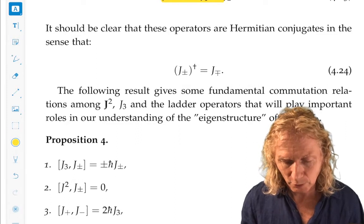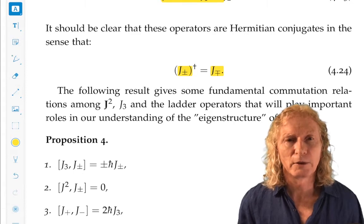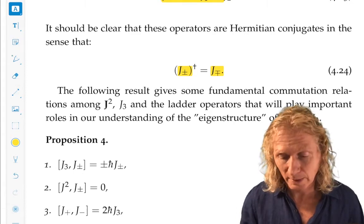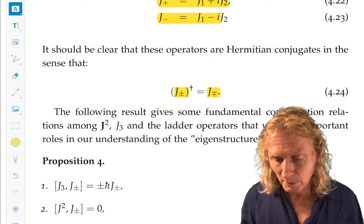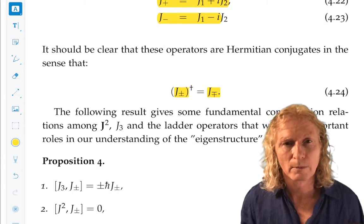j-plus adjoint is j-minus, j-minus adjoint is j-plus. You can verify that easily from their definition using the fact that j1 and j2 are self-adjoint.